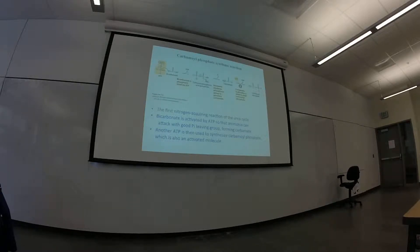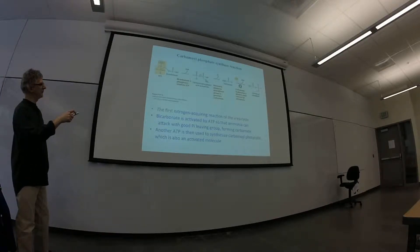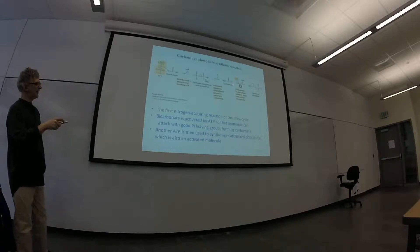So that is this slide here, by which bicarbonate is activated, ammonia attacks to release phosphate, and another ATP is used to generate this carbamoyl phosphate compound. These are pretty straightforward reactions. You don't have to worry about memorizing the sequence of steps, but you should know that there's two ATPs taken up, and you should be able to recognize this compound.